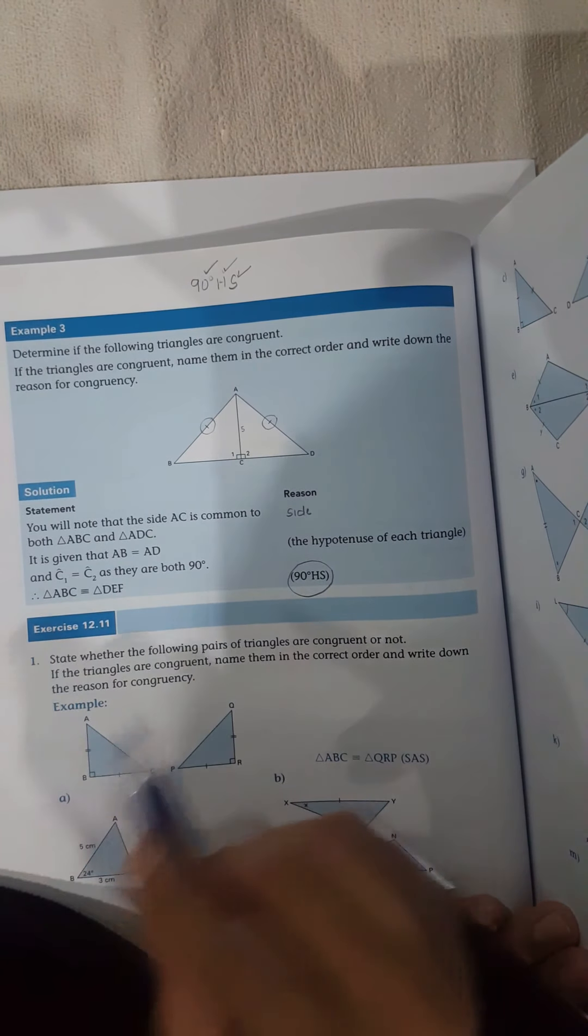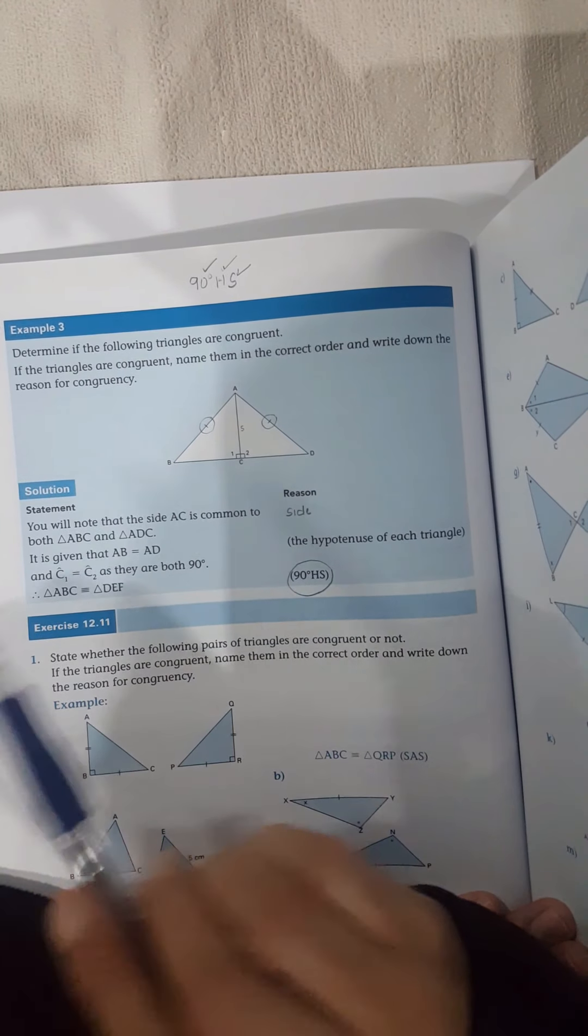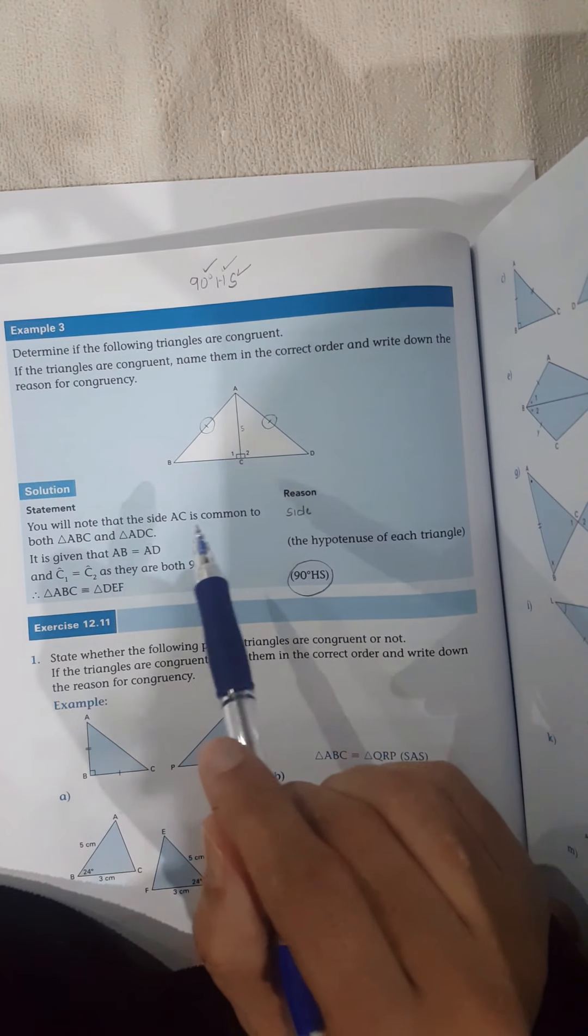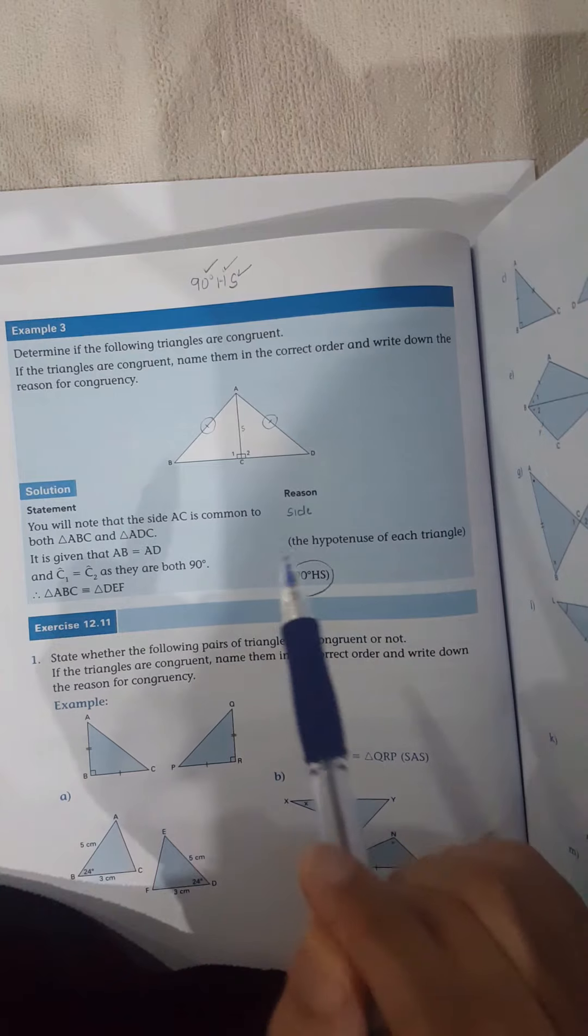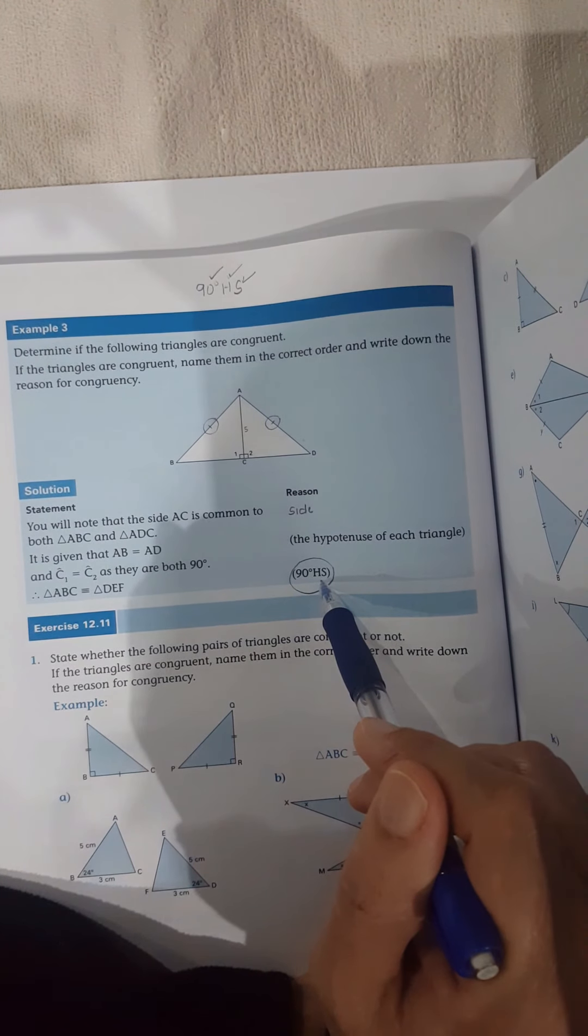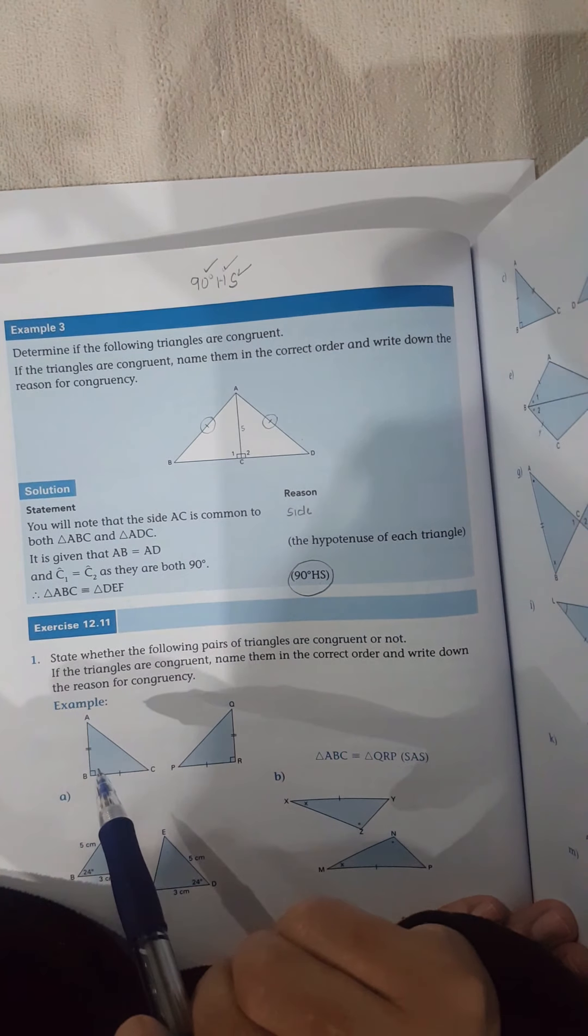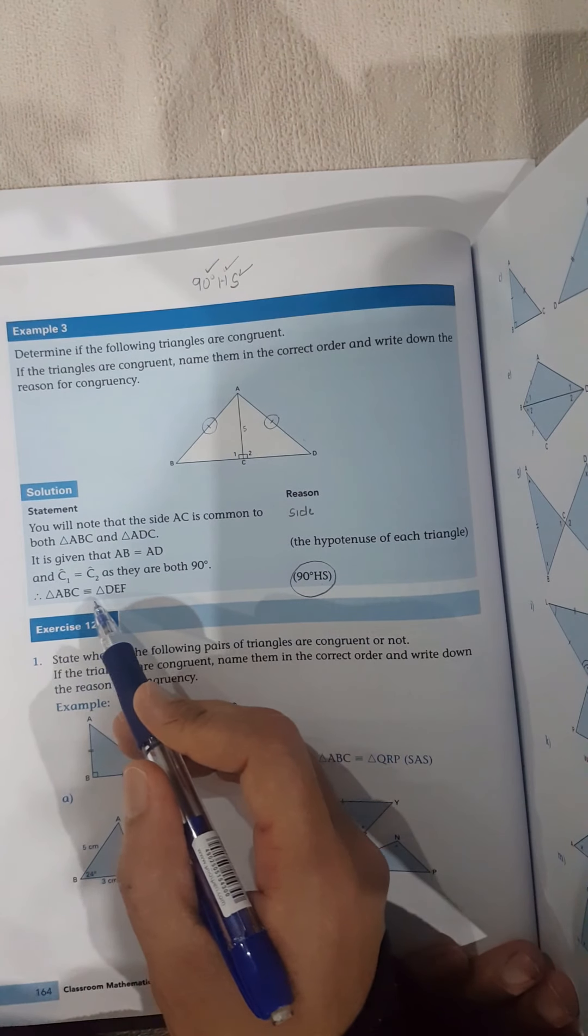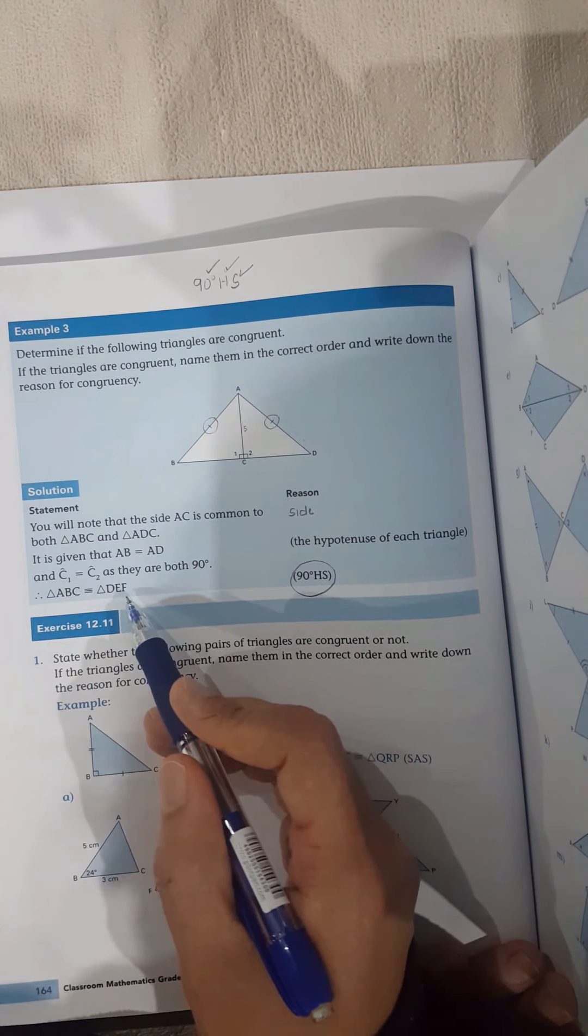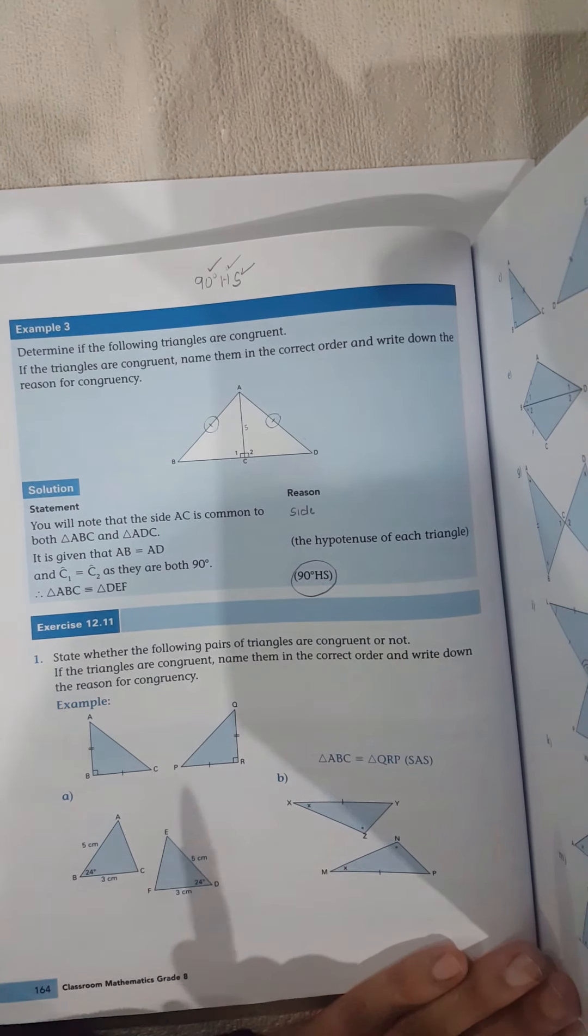All you need to do is look at the diagram. Look for the four conditions. Which one of the conditions do I have? If I don't have it, I cannot say they are congruent. Now I have proven a condition of congruency. Remember in the previous example, there was no condition of congruency. So triangle ABC is congruent to triangle DEF. And our reason is 90 degrees hypotenuse side.